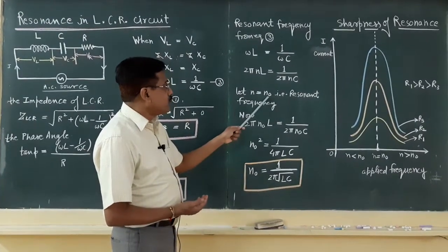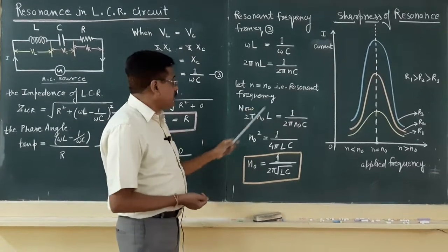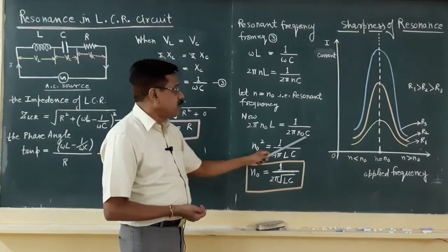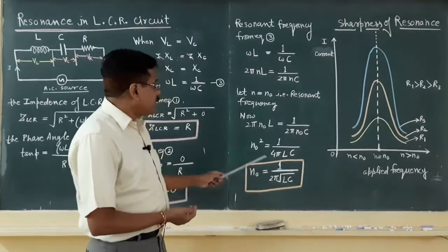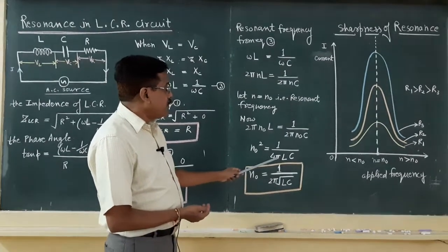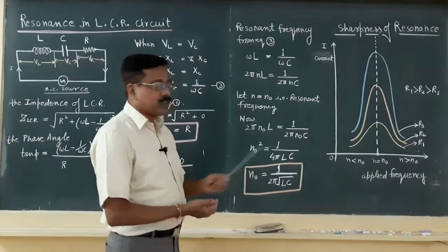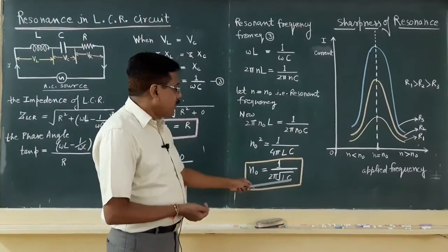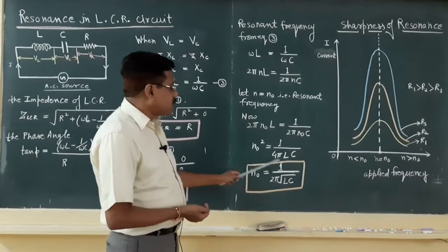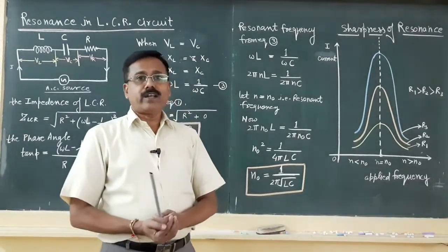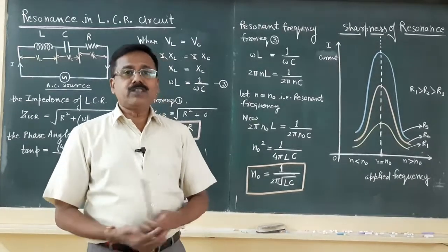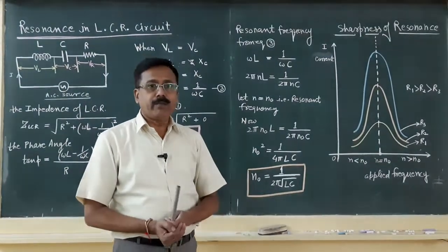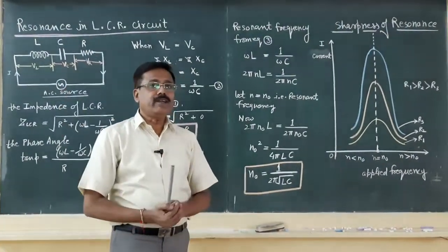Let at N equals N_0 these two terms are equal. Then you will say 2 pi N_0 L equals 1 by 2 pi N_0 C. When you simplify, we have N_0 square equals 1 by 4 pi square L C, or N_0 equals 1 by 2 pi under root L C. This equation is to calculate the resonant frequency at which the resonance phenomenon took place, that is the impedance of LCR circuit will be minimum and accordingly the current will be maximum.